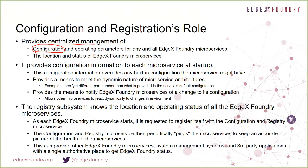What is the configuration and registration microservice's role? Centralized management of a couple of things: first, centralized management of configuration information — what are typically key-value pairs that help drive almost any application. For example, your server port. You may want to change that, so you don't want to hard-code it into an application. You provide some mechanism that says, for our application, its server port is a given number.